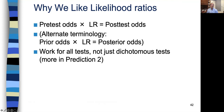Why do we like likelihood ratios? They can greatly simplify that rather tedious but straightforward process of using the two-by-two table method to go from pretest to post-test probability. The slight complication is that they work with odds. The key formula is: pretest odds times the likelihood ratio equals post-test odds — alternatively, prior odds times likelihood ratio equals posterior odds. This works for all tests, not just dichotomous tests, as you'll learn in Prediction Two.